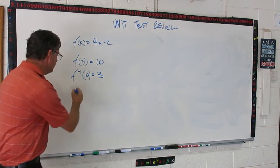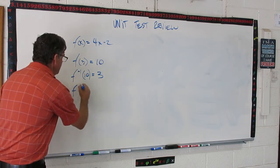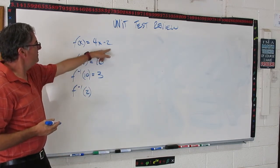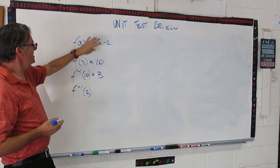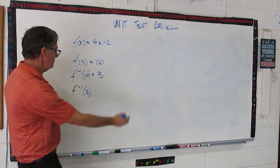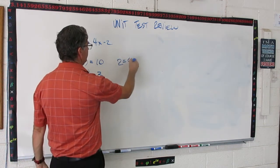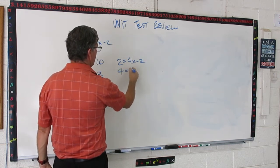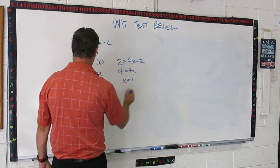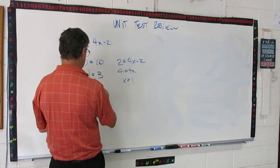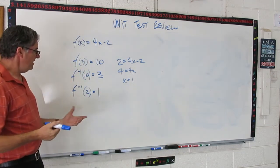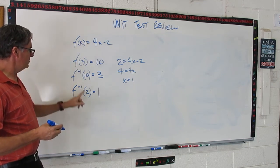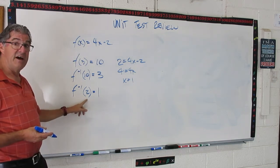So, here's another one. How about f inverse of 2? So, what they're asking here is what value of x makes this 2? So, what we do is we do 2 equals 4x minus 2. Add the 2. 4 equals 4x. x equals 1. So, f inverse of 2 is 1. And the way you check that is if you put 1 in for x, it's going to give you 2 out. And indeed, that is correct.